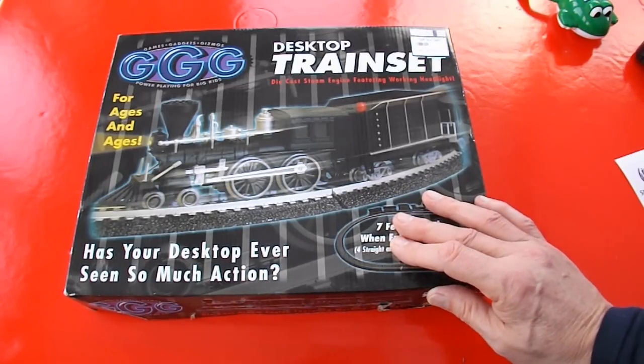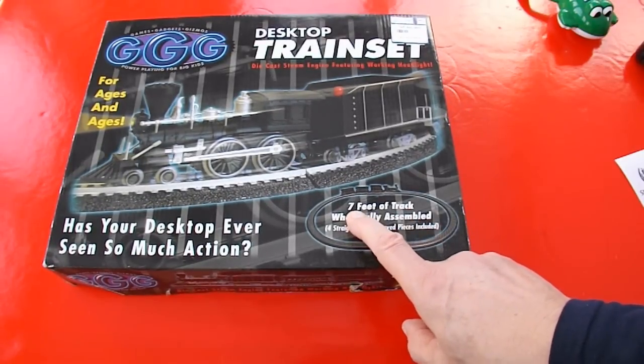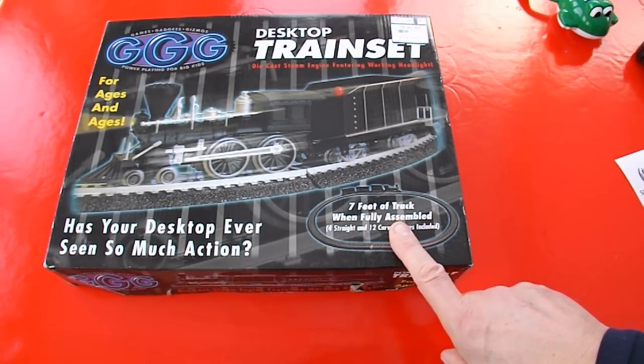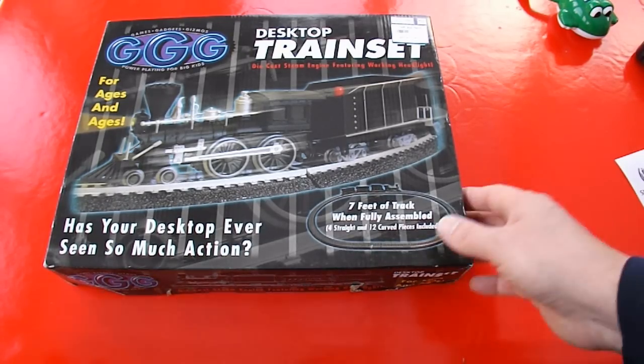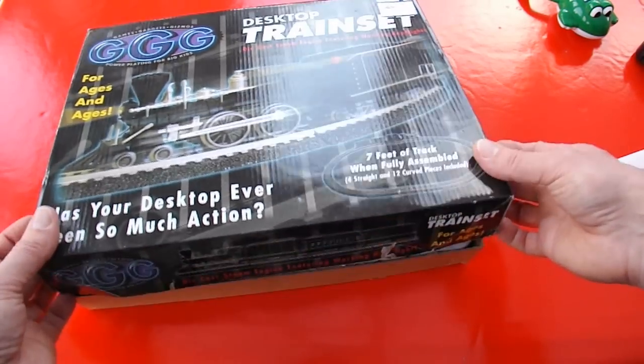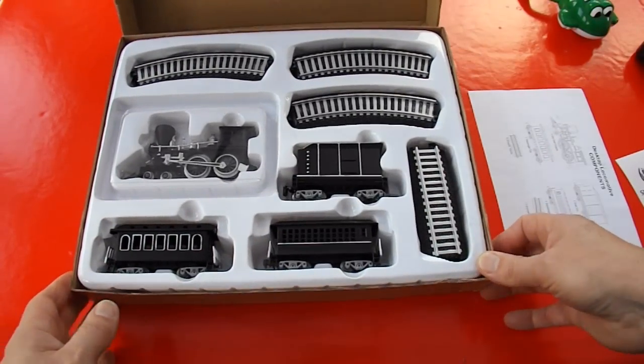Don't need one. But I did look at it and it said seven feet of track when fully assembled. Four straights and twelve curved pieces included. And I had a look inside and I thought that actually looks rather nice.